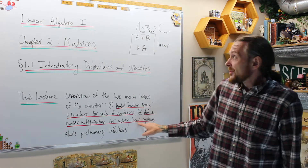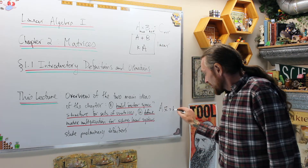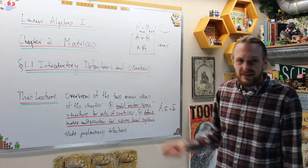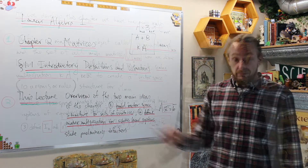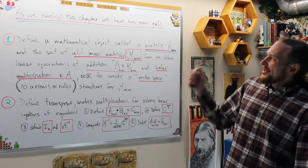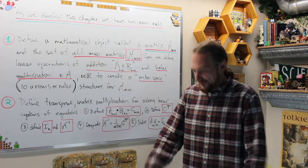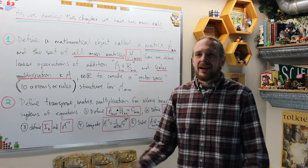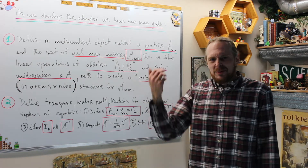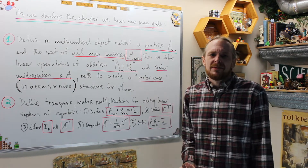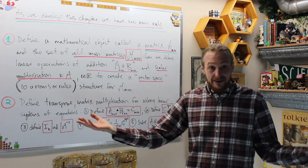Why the heck are we doing it? To solve linear systems. We're eventually going to phrase a linear system as AX equals B and then solve for X. In Chapter 1, we already used Gaussian-Jordan elimination on an augmented matrix to systematically determine whether a linear M-by-N system has one solution, no solution, or infinitely many — and those are the only three cases.